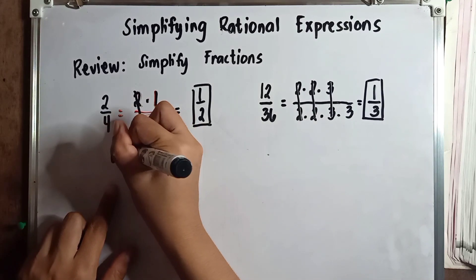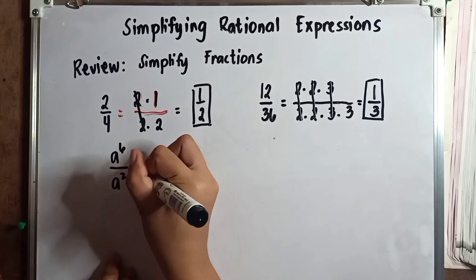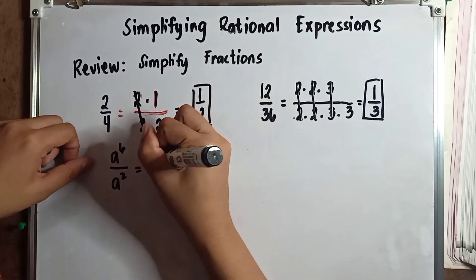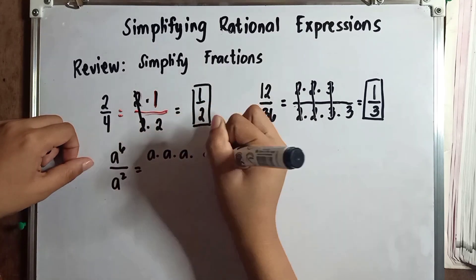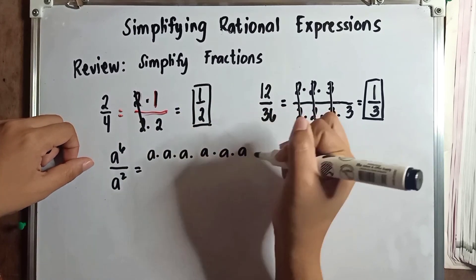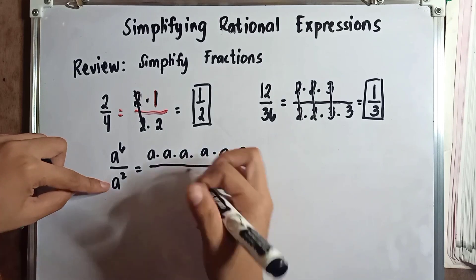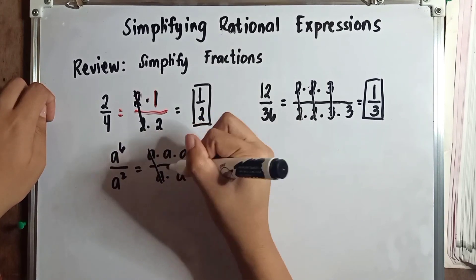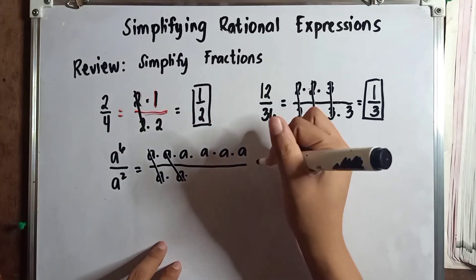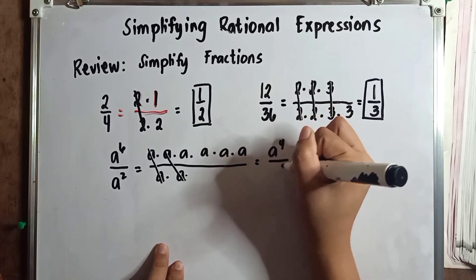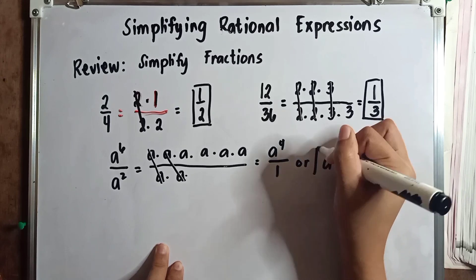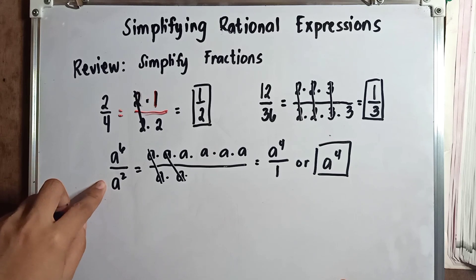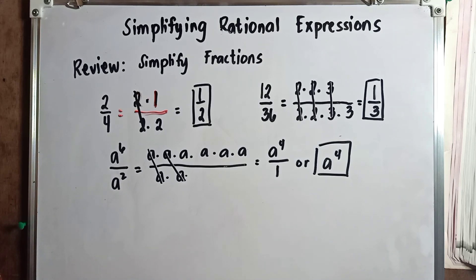How about a to the power of 6 over a squared? What we are going to do is factor out a to the power of 6, which is a times a times a times a times a times a. For a squared, we have a times a. Then we cancel out the common factors, which are a and a. What remains is a to the power of 4 over 1, or a to the power of 4.